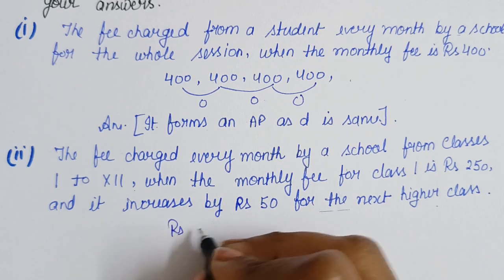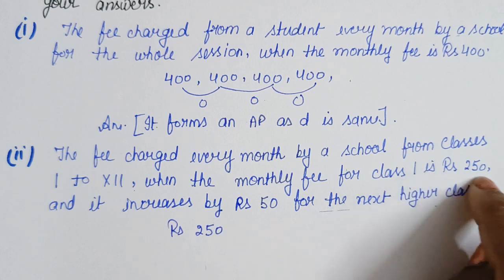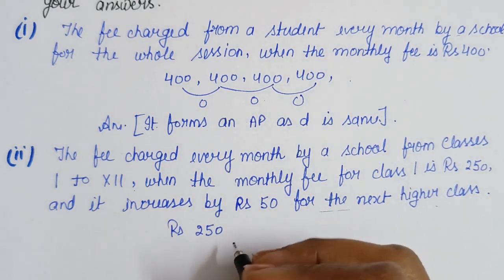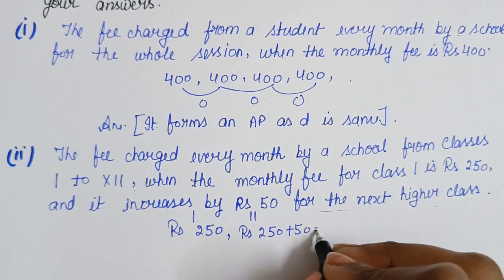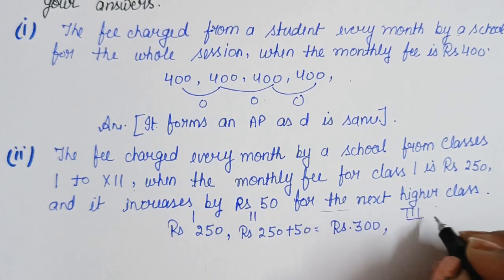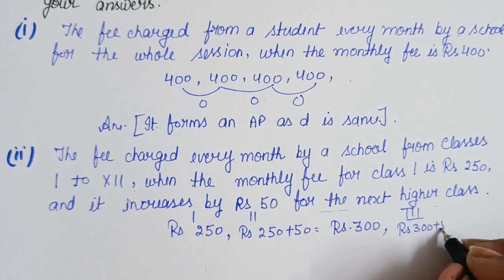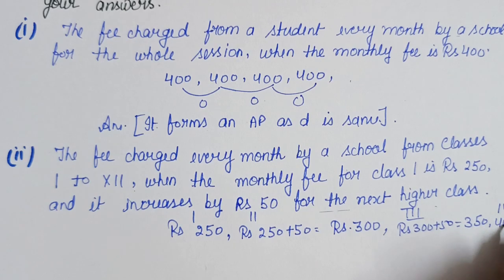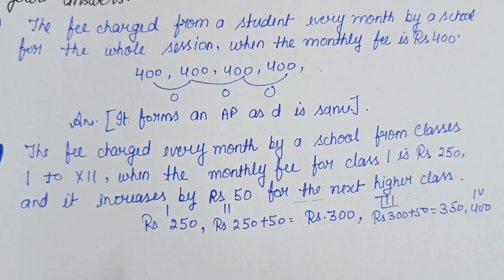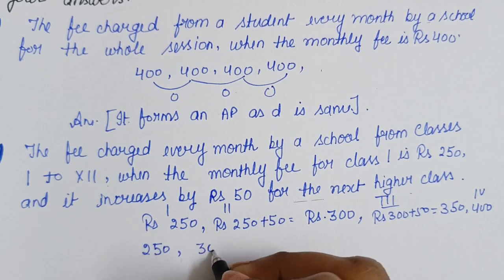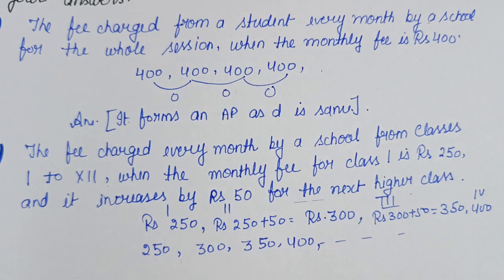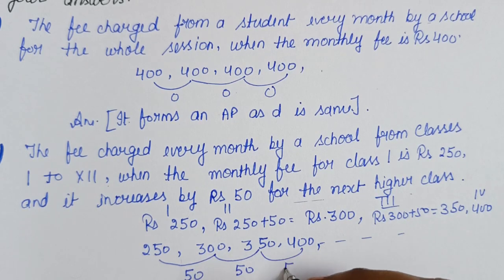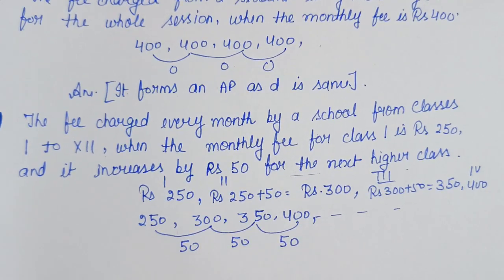For class 1 the fee is Rs. 250. For class 2 it becomes Rs. 300. For class 3, Rs. 300 plus Rs. 50 means Rs. 350. For class 4 it will be Rs. 400, and so on — 250, 300, 350, 400. So every session the fee increases by Rs. 50, and the difference is consistently 50.